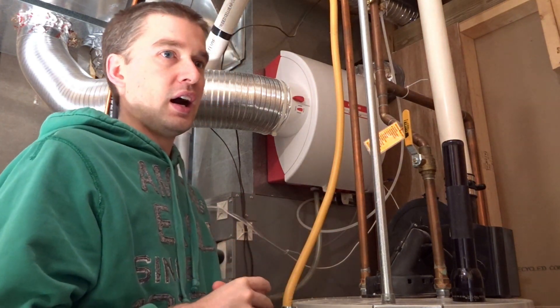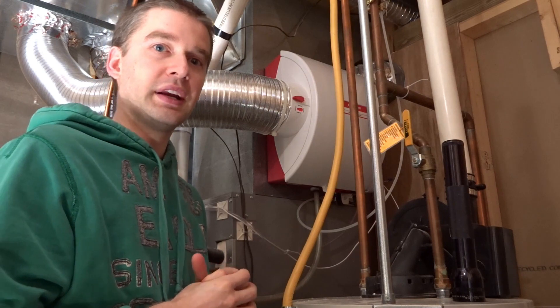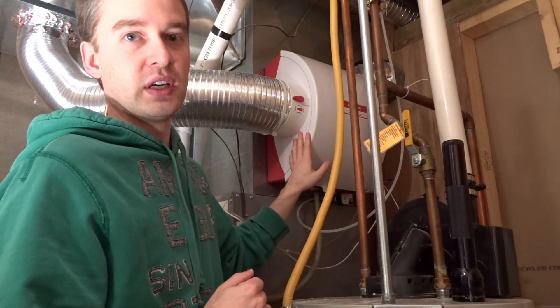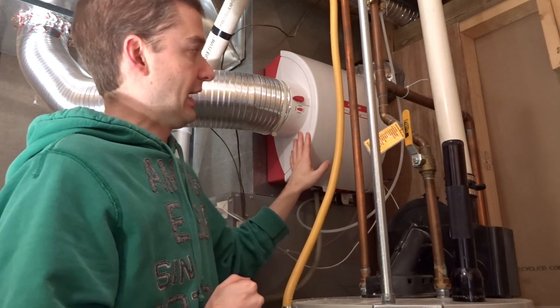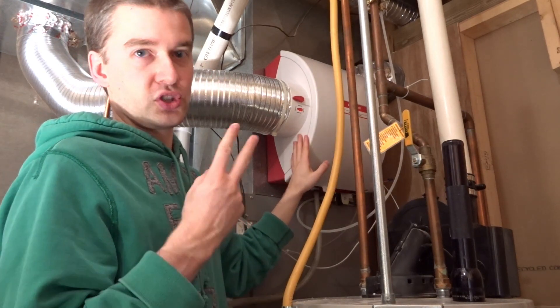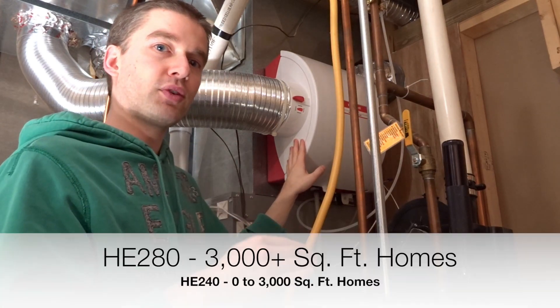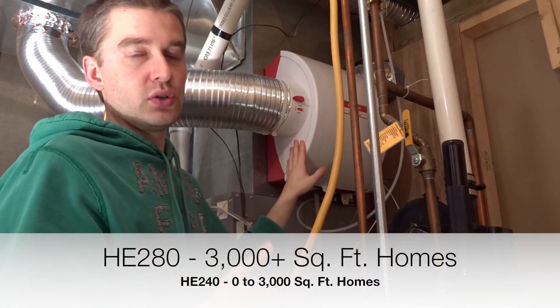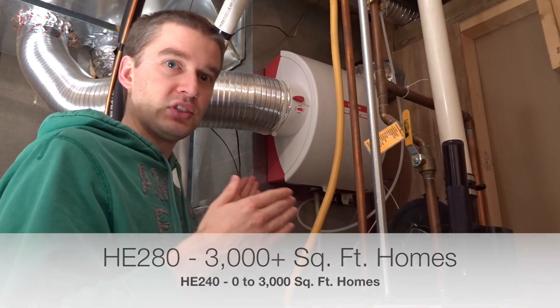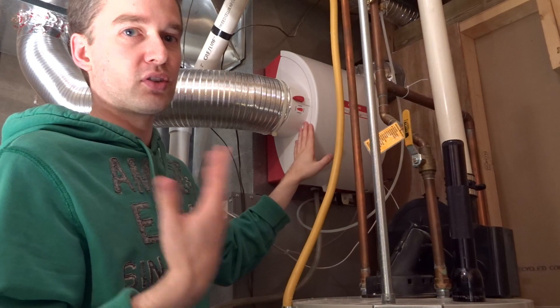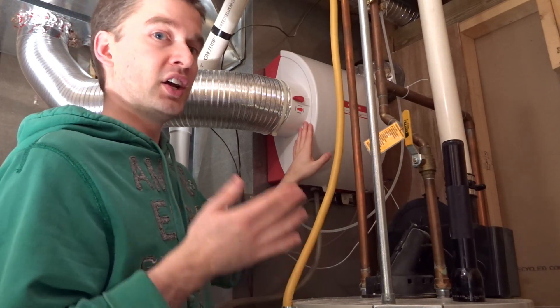This unit here was about two hundred dollars from Home Depot, and this is the bigger model. There's two models: the HE280, which is meant for three thousand square foot homes and above, and then there's the HE240, which is meant for anything zero to three thousand square feet. This is the bigger model. We have about a twenty-four hundred square foot house, so this is a little bit overkill.